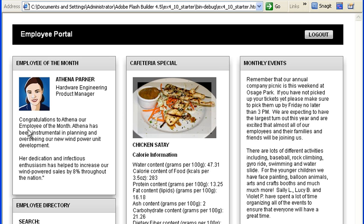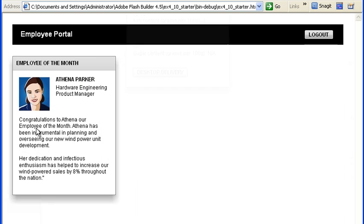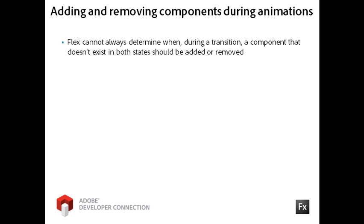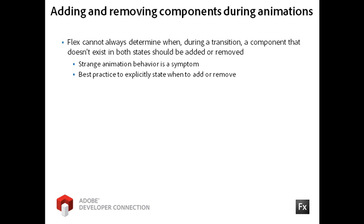Let me run that again by logging out and then logging back in. You are seeing this problem because Flex cannot always determine when during a transition a component that doesn't exist in both states should be added or removed from the animation. In my example, the Login container exists in the Login state but not the Portal state, and the Search, Cafeteria Special, and Monthly Events containers exist in the Portal state but not the Login state. Strange animation behavior like you just saw is a common symptom of Flex needing more information to properly animate the components. The best practice for handling components that don't exist in both states is to explicitly state when to add or remove them during the animation.